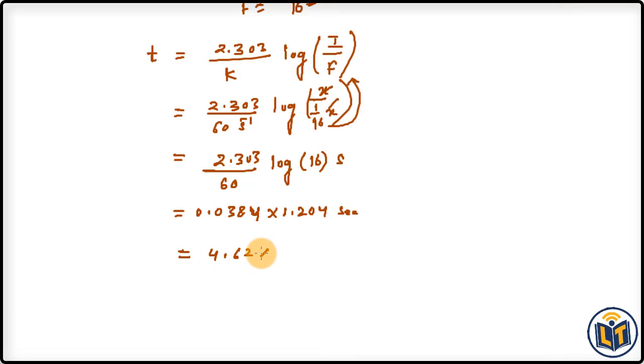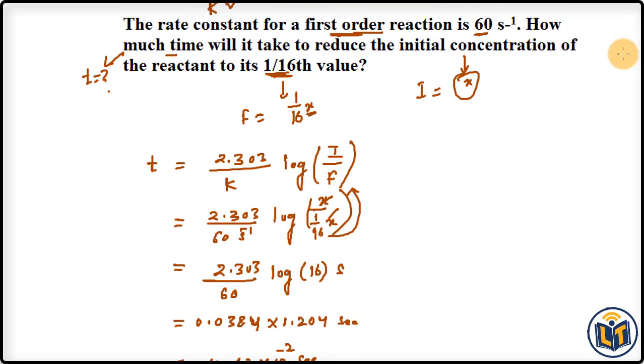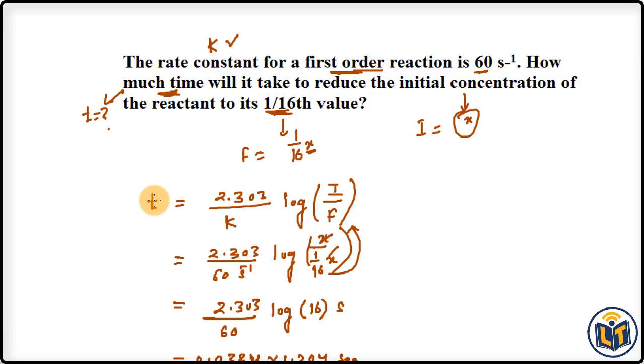The answer is 4.62 × 10^-2 seconds. This is the time taken to reduce the initial concentration of the reactant to its 1/16th value. Here you can see how I calculated the time by using the